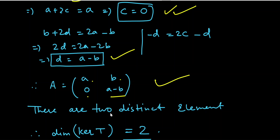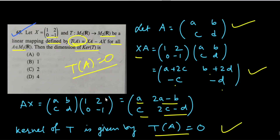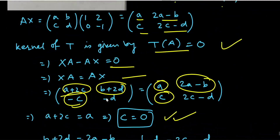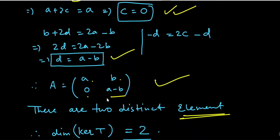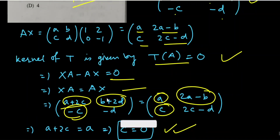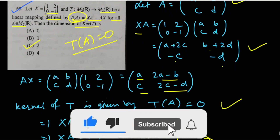Therefore the matrix A takes the form [[a, b],[0, a−b]], which has two free parameters a and b. Hence the dimension of the kernel of T is 2. Option C is correct.